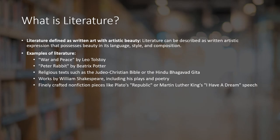Now the definition — what is literature? Literature is defined as written art with artistic beauty. Literature can be described as written artistic expression that possesses beauty in its language, style, and composition. So literature is, of course, an art form — it's an artistic expression. How things are written can also, through literature, express certain things.